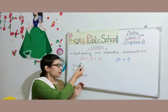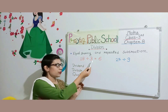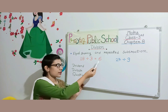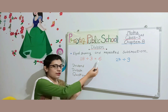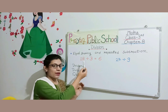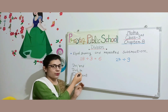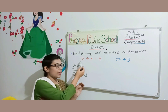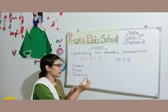For example, 18 divided by 3 gives us 6. When we divide 18 by 3, we get the answer 6. The number to be divided is known as the dividend. So 18 is the dividend.